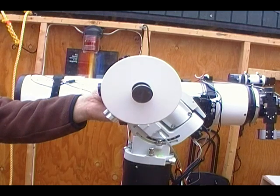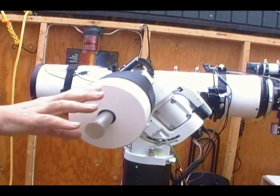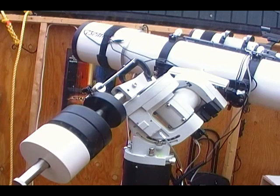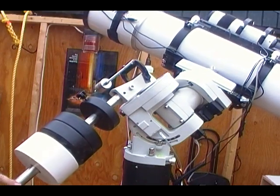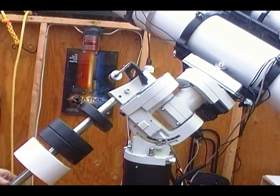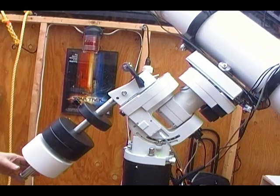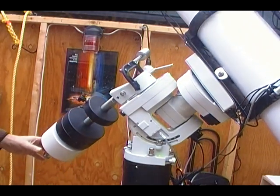Contrary to some tutorials, I balance declination first. Every bit of weight added, removed, or shifted for declination balance affects RA balance, but not the reverse, so I hold off RA balance until I have a good declination balance.